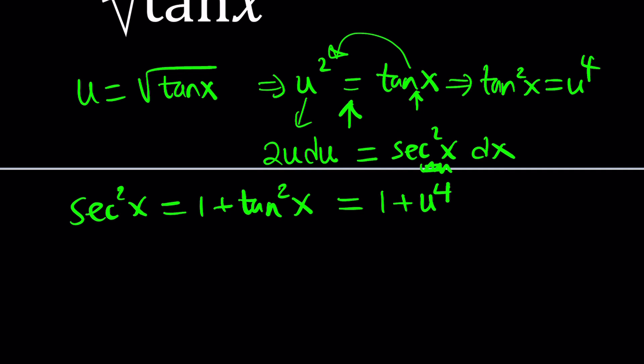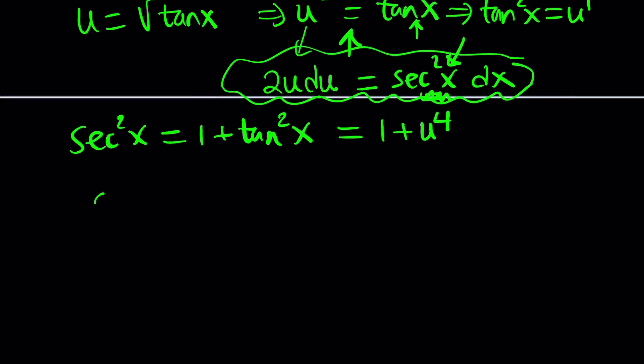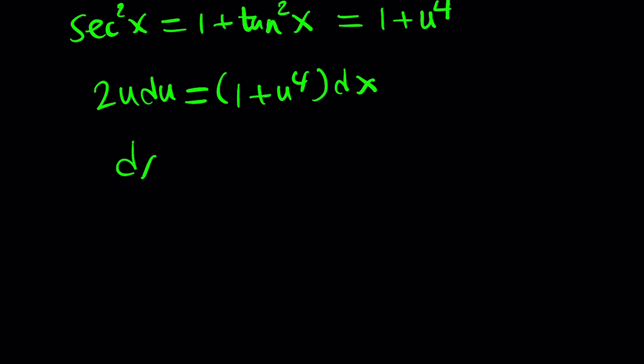Now, we have this equation, but we do need to replace dx with something. And dx isn't totally by itself, and we also have an x term on the right-hand side. But don't worry, you can replace this with 1 plus u to the fourth. So you get 2u du equals 1 plus u to the fourth dx. Now you can isolate dx. Isn't that beautiful? dx can be written as 2u over 1 plus u to the fourth du.